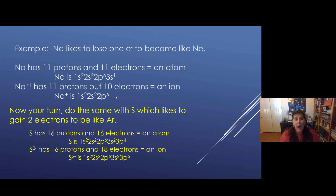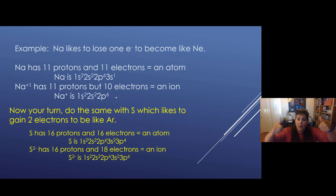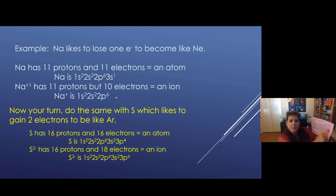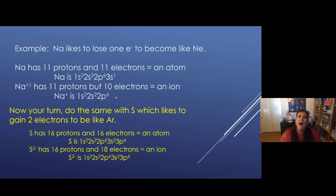So the sulfur 2 minus ion still has 16 protons — protons don't change — but now it has 2 more electrons that it gained, going from 16 up to 18 electrons. It has a charge, so it's an ion. The electron configuration for S2 minus is 1s2, 2s2, 2p6, 3s2, 3p6. S2P6 — that's how we end, and that makes us happy and stable. Why is S2 minus like argon? Because argon has 18 electrons, just like the sulfur 2 minus ion. They have the same number of electrons and the same electron configuration.